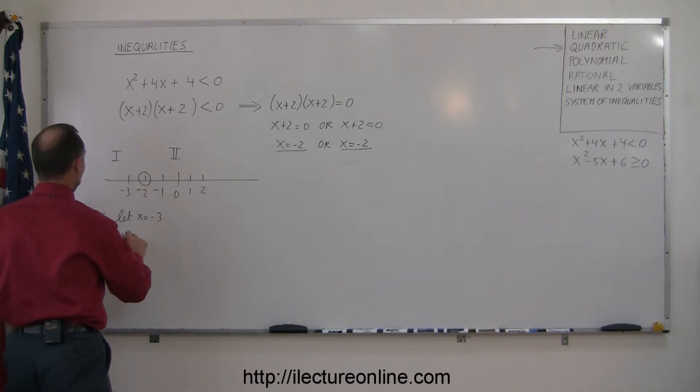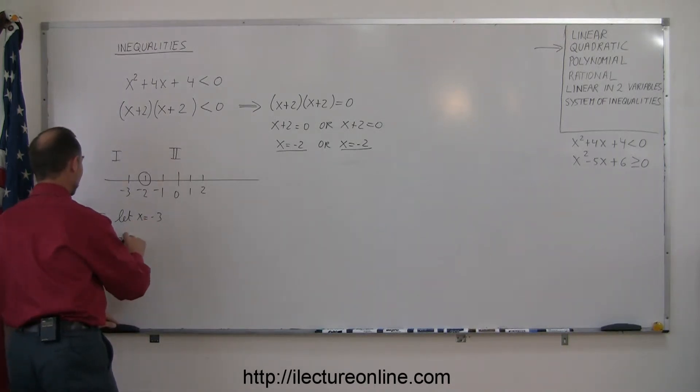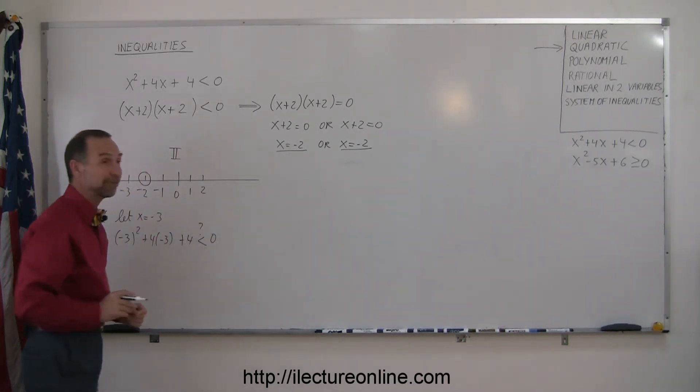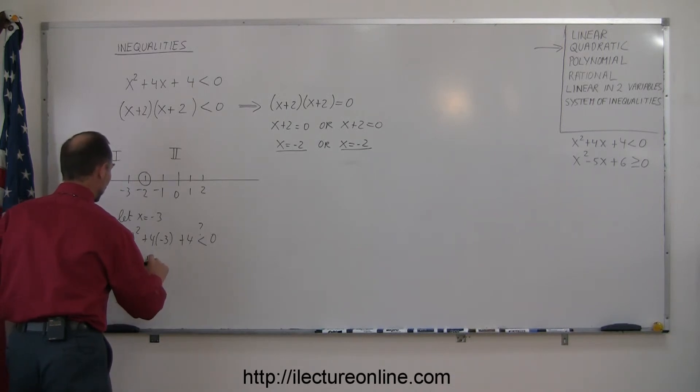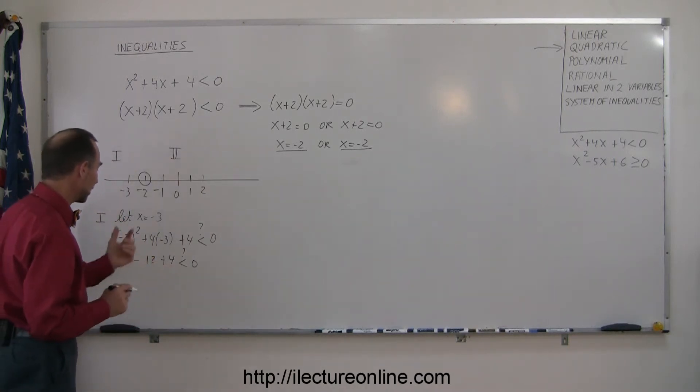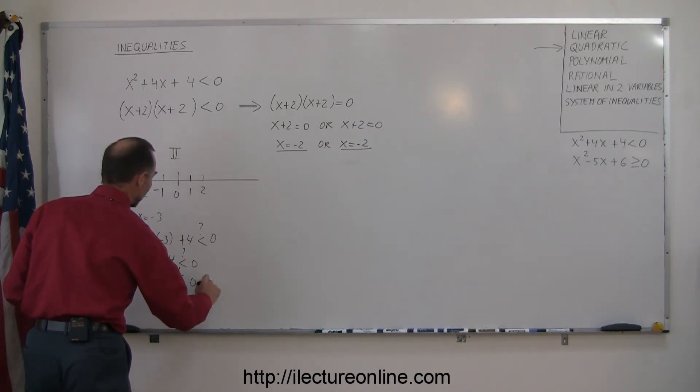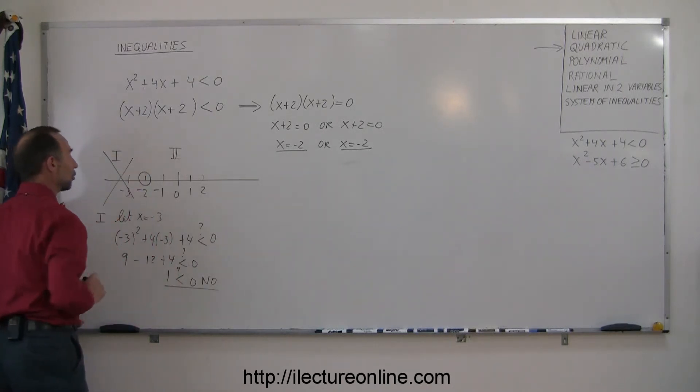So the number negative 3, I need to substitute in for x the number negative 3, so negative 3 squared, plus 4 times negative 3, plus 4, is that less than 0? That's what we're trying to find out. If it is, we found a point in the region that satisfies the inequality. So this becomes 9, minus 12, plus 4, less than 0? And notice, 9 plus 4 is 13, 13 minus 12 is 1, 1 less than 0? And the answer is no, 1 is not less than 0, which means that region 1 is not part of the solution.